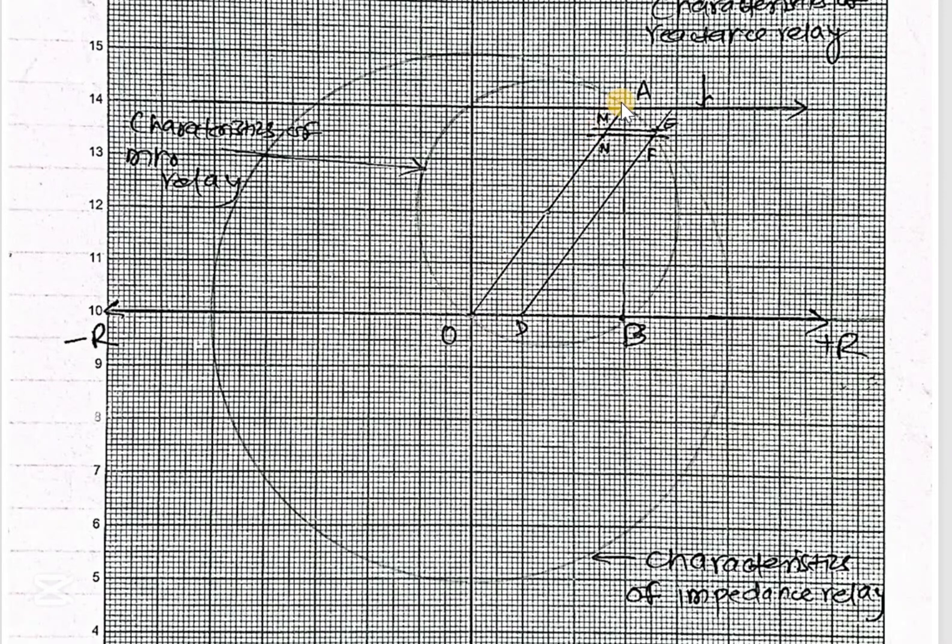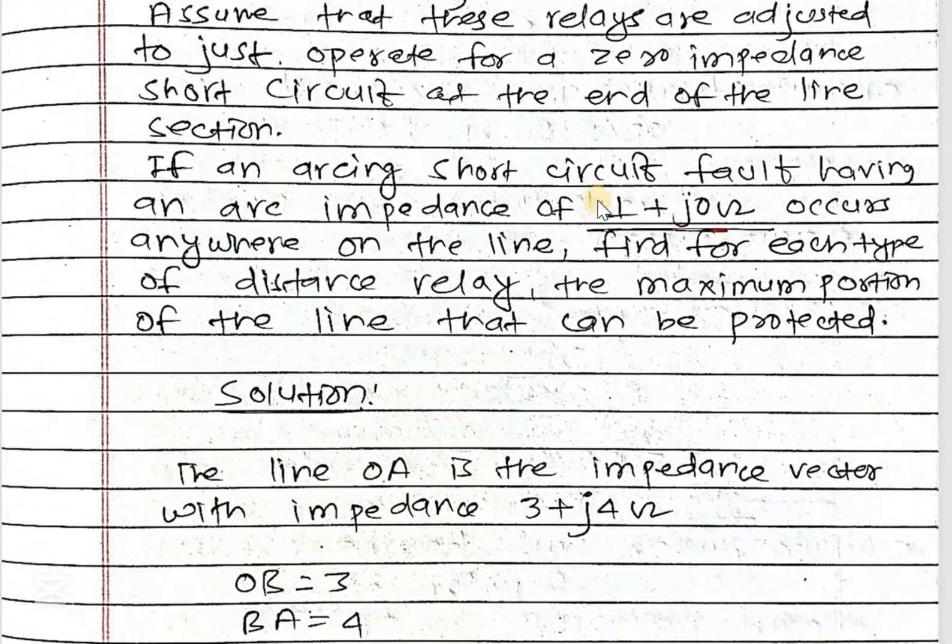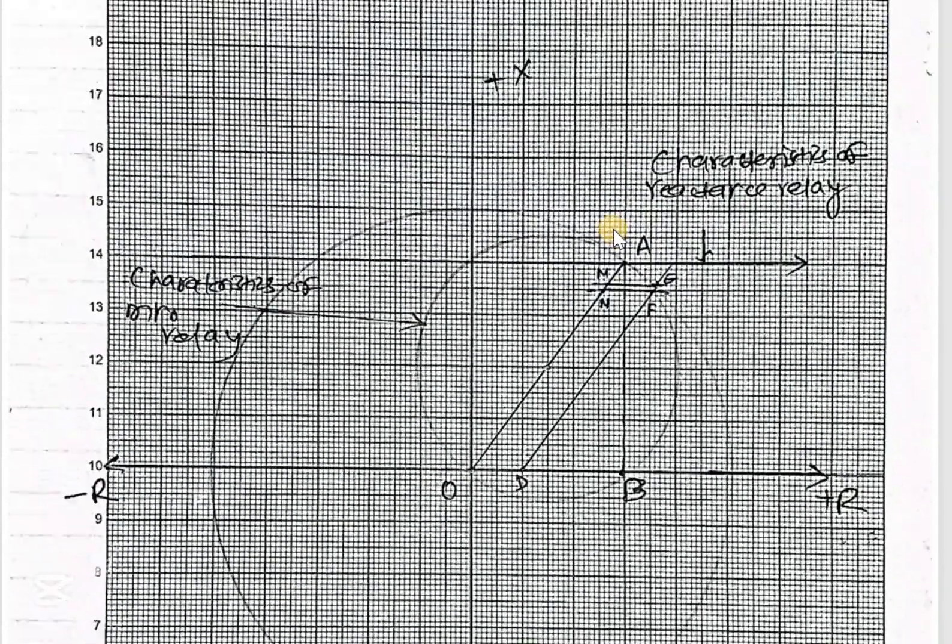Then draw a perpendicular line A to B. Here, given arc impedance is 1 plus j0, then taking the magnitude of this: that is 1 squared plus 0 squared equals 1.